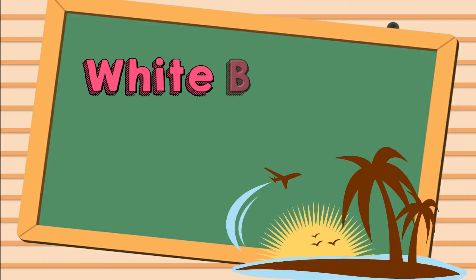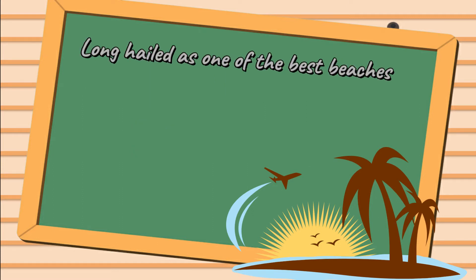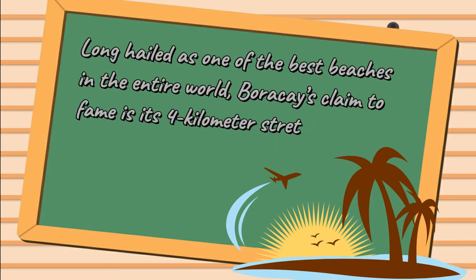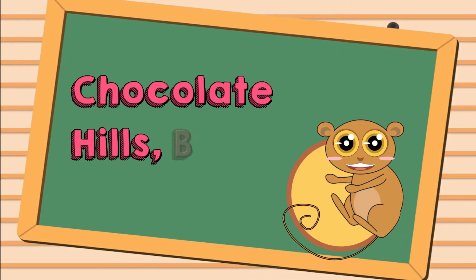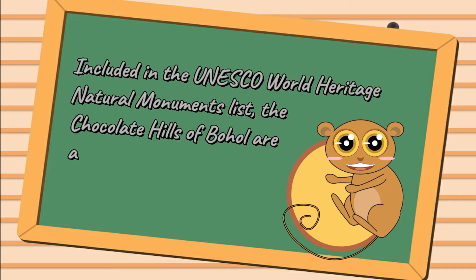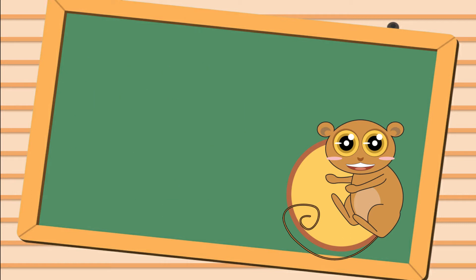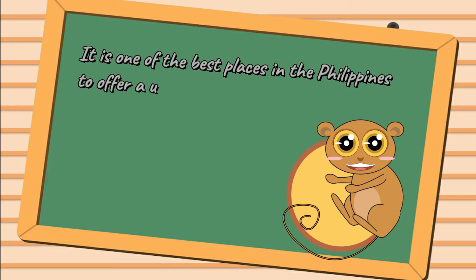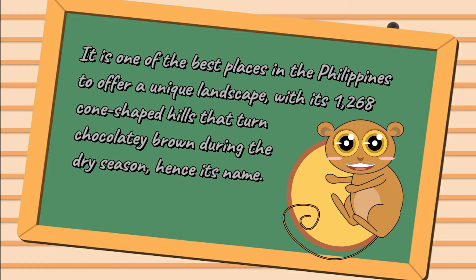For example — Number 1: White Beach, Boracay. Long hailed as one of the best beaches in the entire world, Boracay's claim to fame is its 4-kilometer stretch of pure white, powdery sand called White Beach. Number 2: Chocolate Hills, Bohol. Included in the UNESCO World Heritage Natural Monuments list, the Chocolate Hills of Bohol are a geomorphic wonder and truly a sight to behold. It is one of the best places in the Philippines to offer a unique landscape, with its 1,268 cone-shaped hills that turn chocolatey brown during the dry season, hence its name.